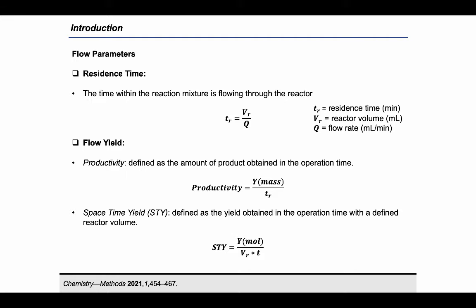This new concept is defined as the residence time, and it can be calculated as the volume of the reactor divided by how fast the reaction mixture is pumped into the reactor itself, which is called the flow rate.